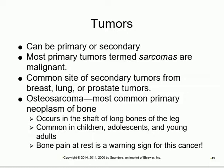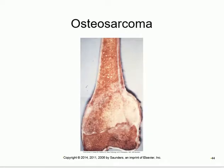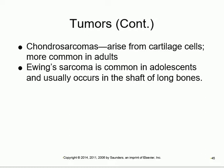Bone tumors can be primary (starting from the bone itself) or secondary (metastasized from elsewhere, such as breast or lung cancer). The most common primary bone tumor is osteosarcoma. Chondrosarcoma is a malignant cancer of the cartilage. Ewing's sarcoma is similar but occurs in adolescents.